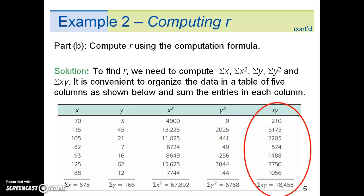The last column is the xy column, which requires us to take the product or multiply x and y. For example, 70 times 3 is 210. And just like the previous columns, at the bottom, we sum up all the xy values to get 18,458.